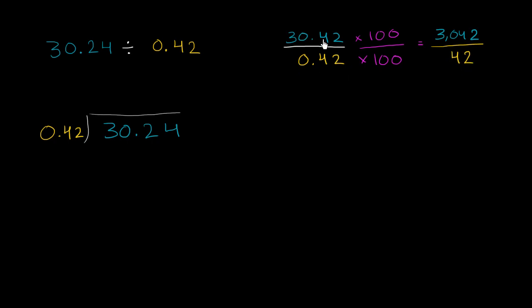So this is going to be the exact same thing as 3,042 divided by 42. So once again, we can move the decimal here, two to the right. And if we move that two to the right, then we can move this two to the right. Or we need to move this two to the right. And so this is where now the decimal place is. You could view this as 3,024 divided by 42.